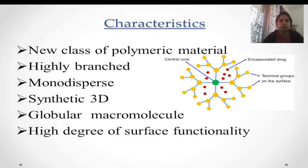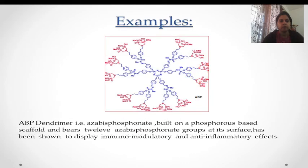On the screen you can see an example called ABP dendrimer - the full name is azabis phosphonate. In the center there is a molecule on which a number of generations has been grown outwards radially symmetrically, and the structure we have is a dendrimer. These dendrimers are very useful in the medicinal field, especially in drug delivery systems.